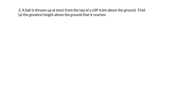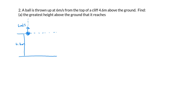Question 2. A ball is thrown up at 6 meters per second from the top of a cliff 4.6 meters above the ground. Find the greatest height above the ground that it reaches. The zero line is at the top of the cliff where the ball is thrown. The ball goes straight up, stops, then comes straight back down.